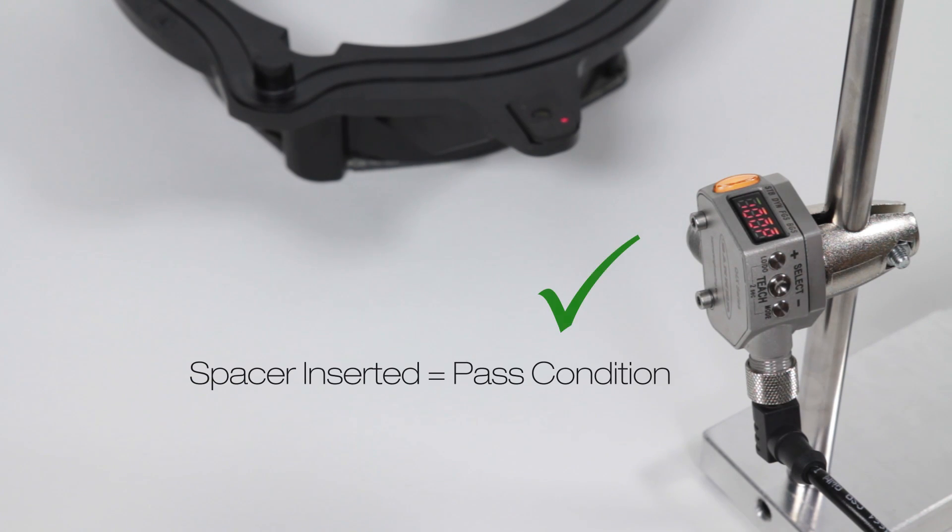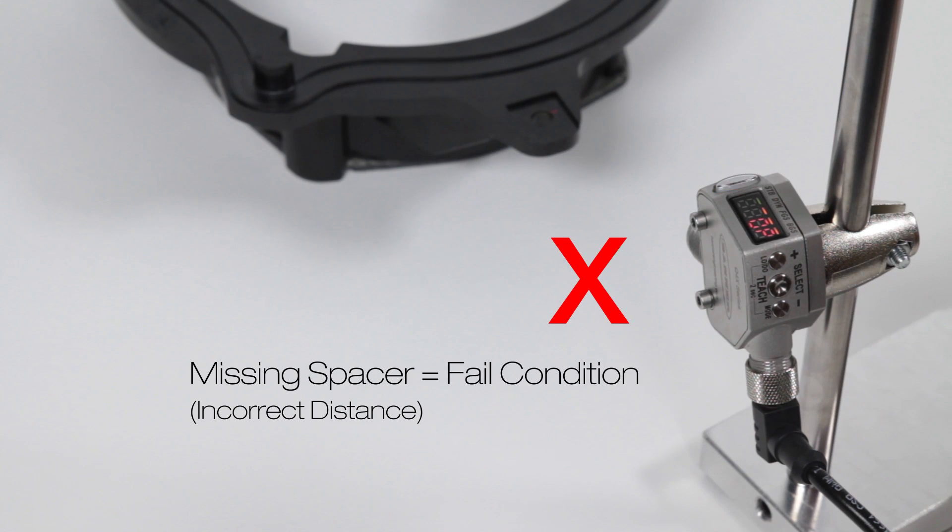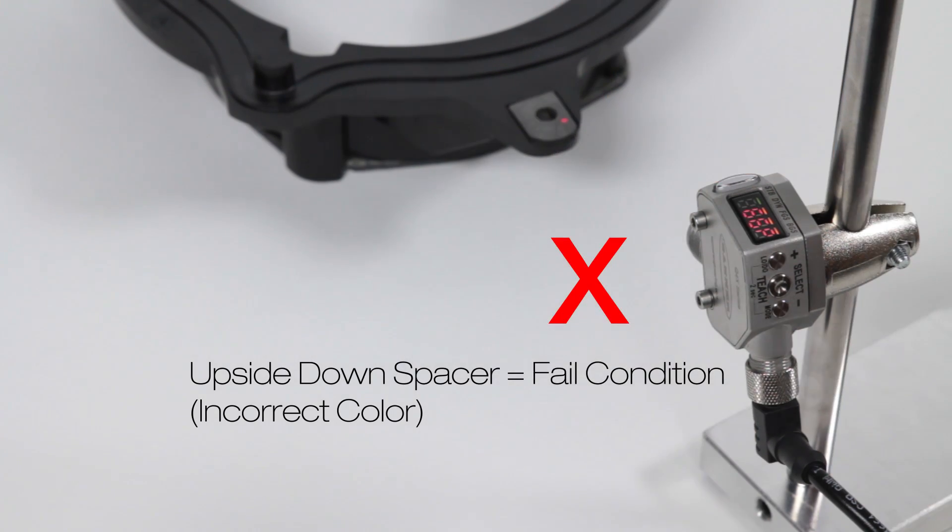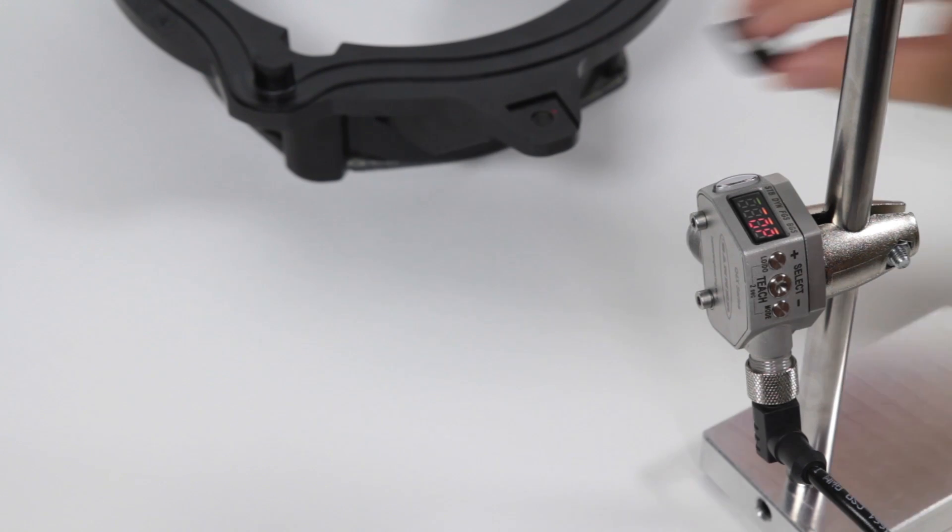The Q4X can pass the correctly seated spacer but rejects a missing spacer, upside down spacer, or two spacers stacked on top of each other.